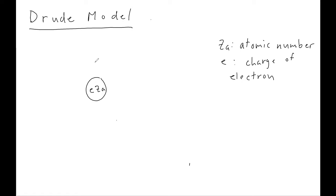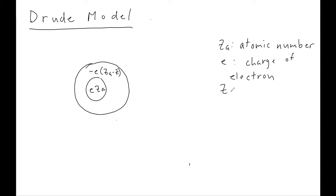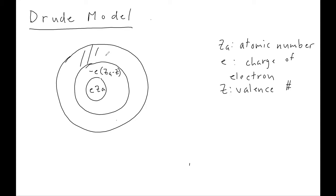The nucleus has a positive charge e times Z sub A. Around this nucleus is a set of core electrons with charge minus e times (Z sub A minus Z), where Z is the valence number. The valence electrons form a cloud of charge minus eZ around the atom.